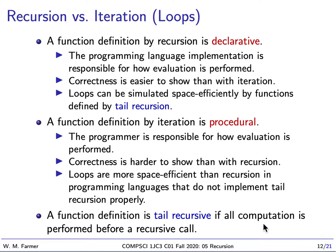We can do away with loops if we have tail recursive functions, as long as we implement tail recursion efficiently. Loops are normally executed in constant space — when executing a loop, you have some variables, you update them, but your memory doesn't grow. We can implement tail recursion to work the same way. Unfortunately, in most programming languages, tail recursion is not implemented properly, so instead of using constant space, we use more and more space, and we could actually run out of space. Sometimes you get a stack overflow error message.